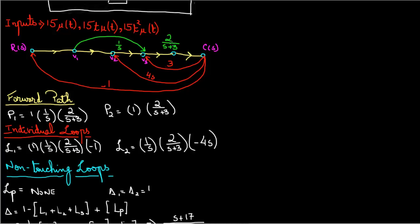So if you look here, it's basically your forward path that you already had so it's going to be 1, 1 over s times 2 over s plus 3 and at c of s we're going to take this bigger loop which is negative 1 and it comes back to our input point which is r of s. So that's your first loop.